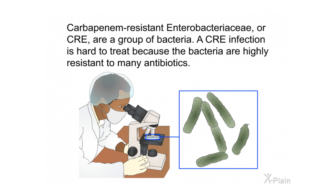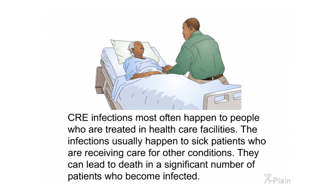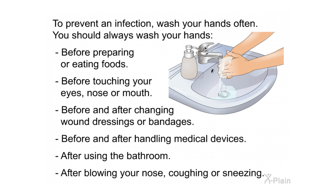Summary: Carbapenem-resistant Enterobacteriaceae, or CRE, are a group of bacteria. A CRE infection is hard to treat because the bacteria are highly resistant to many antibiotics. CRE infections most often happen to people treated in health care facilities, usually sick patients receiving care for other conditions, and can lead to death in a significant number of those infected. To prevent infection, wash your hands often — before preparing or eating foods, before touching your eyes, nose, or mouth, before and after changing wound dressings or bandages, before and after handling medical devices, after using the bathroom, and after blowing your nose, coughing, or sneezing.